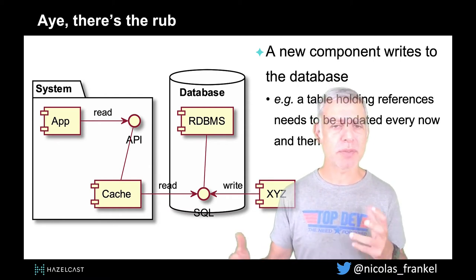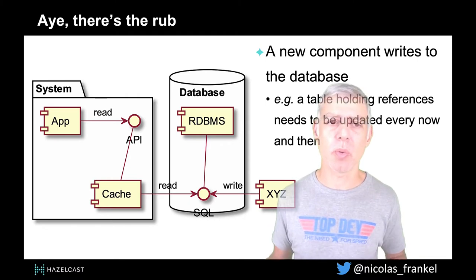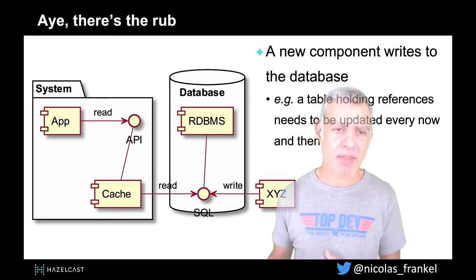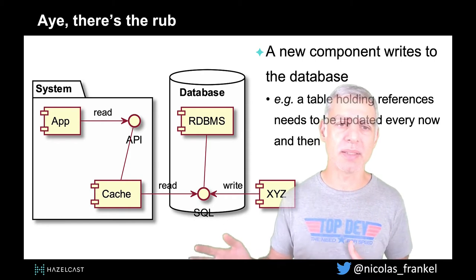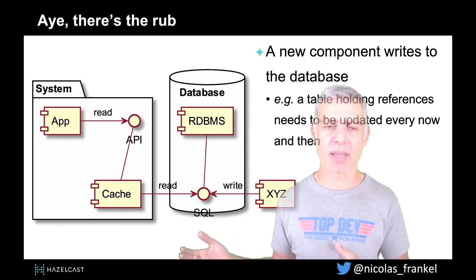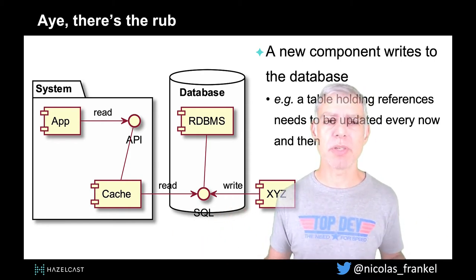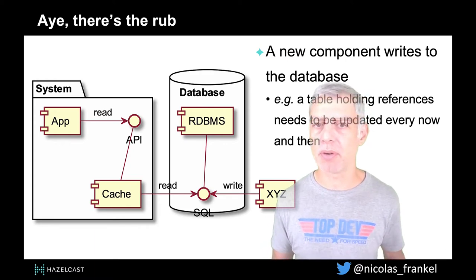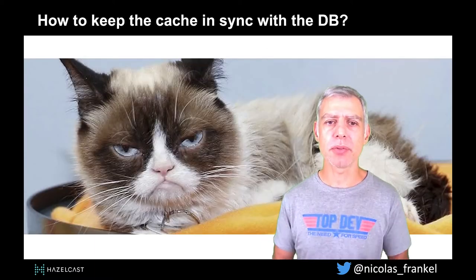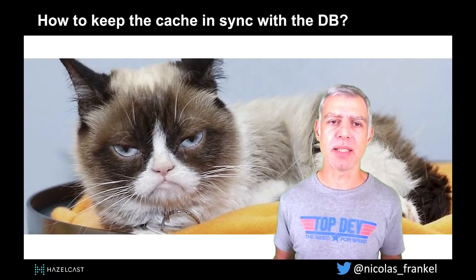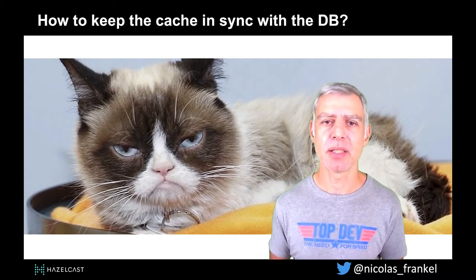Most of the time it's a table that holds references, and those references need to be updated every now and then. For example, there might be a registry of all your customers or this kind of stuff. So the question is: how do we keep the cache in sync with the database?